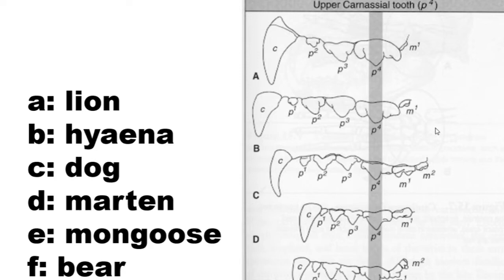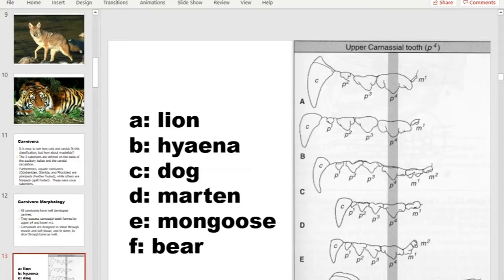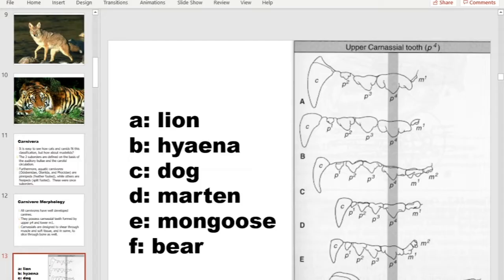Hypercarnivores slice and dice; the subsequent molars do almost nothing. In bears it's different — bears are not hypercarnivores but are more omnivorous. The carnassial tooth P4 in the upper jaw is relatively small, while M1 and M2 are much larger. But bears still have that carnassial tooth — they are still carnivores.